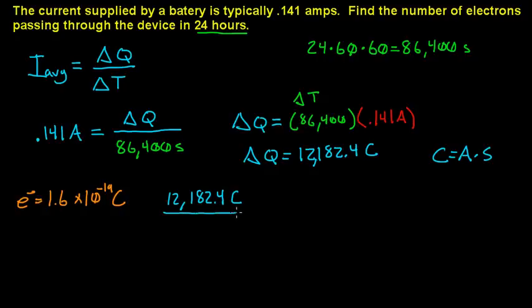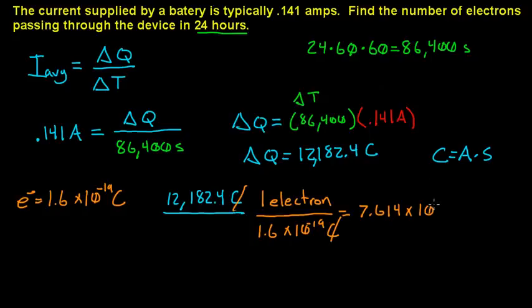So we've got one electron equals 1.6 times 10 to the negative 19th coulombs. When we do that, you cancel off the coulombs, and it's going to give you 7.614 times 10 to the 22nd electrons. And that is your answer.